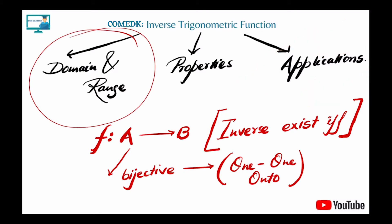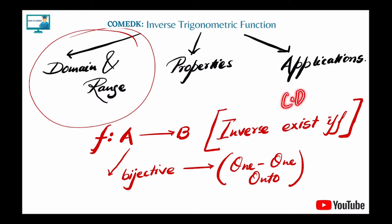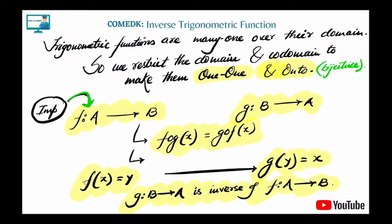The basic of inverse which every student should know: if a function goes from A to B, its inverse only exists if it is a bijective function. A bijective function is a one-one onto function. One-one means one object is associated with one image, and onto means co-domain is equal to range. So the inverse of a function exists if it is one-one and onto.